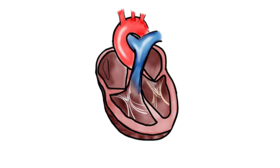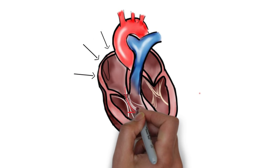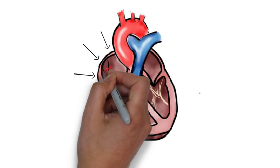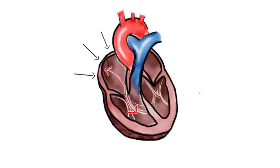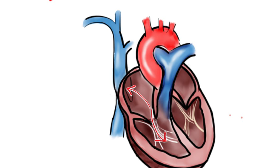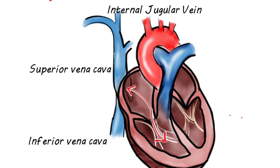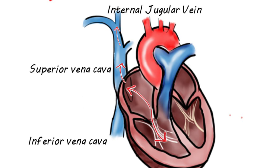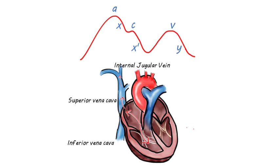When the atria contracts, blood moves from the atria to the ventricle and puts pressure on the atria. This causes a back pressure that is exerted by the atria on the vein. Here is the IVC, SVC, and the internal jugular vein. When there is a rise in pressure in the right atria, this gets reflected in the SVC, which in turn is reflected to the right internal jugular vein. Thus, when the right atria contracts, you see a rise in the waveform, giving us the A wave.